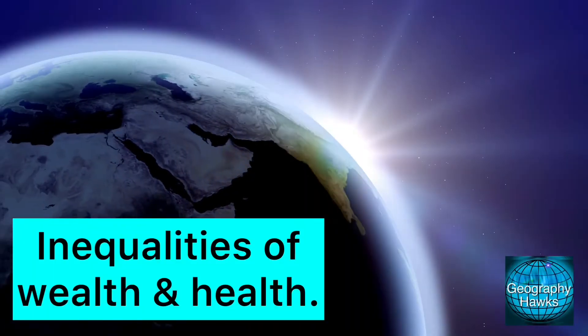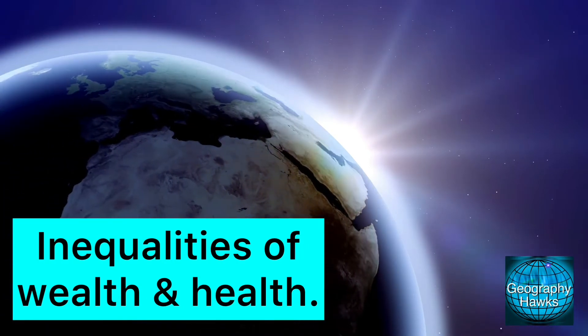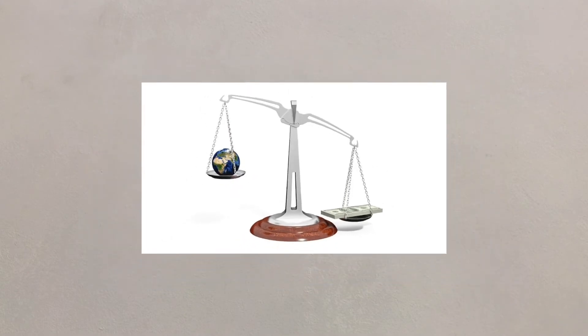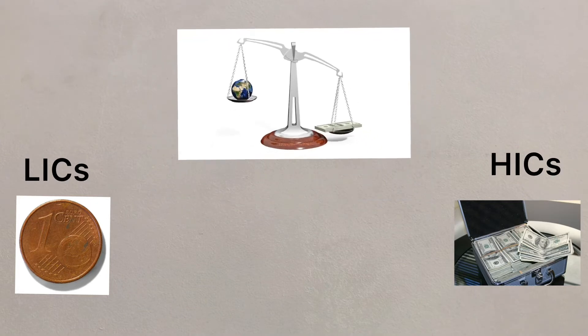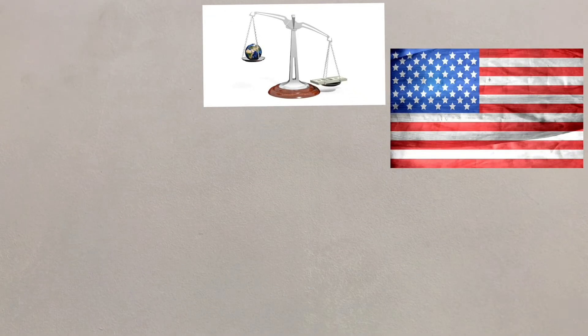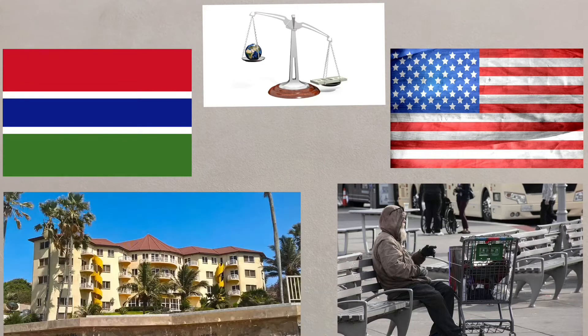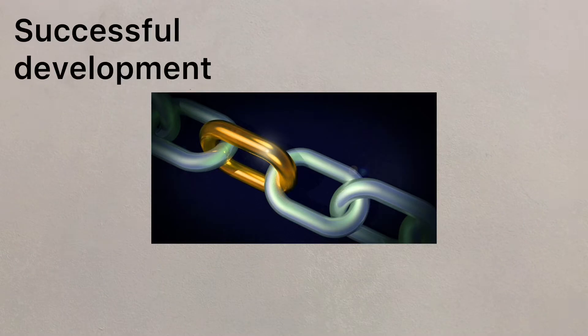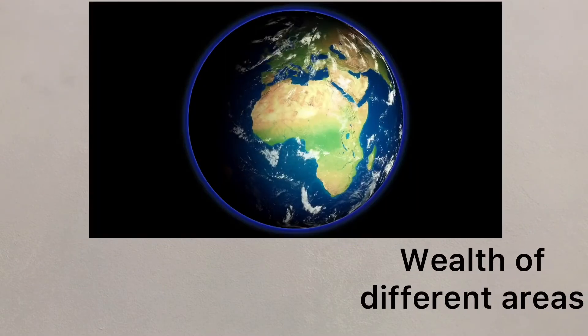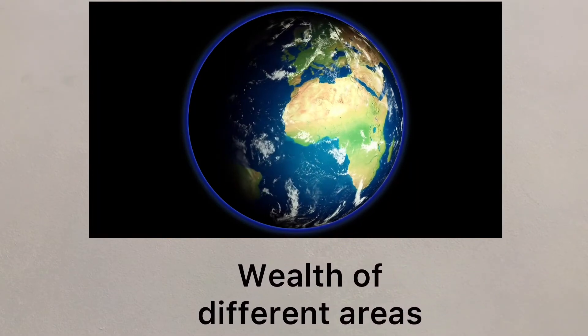Uneven development will lead to an unequal global society. There are differences in wealth distribution as well as the health care that people can receive. There is a clear global imbalance between the wealthier HICs and the less wealthy LICs, but there's also imbalance within countries as well, with HICs having many poor areas while some LICs have some areas of tremendous wealth. There is a link between the successful development of a country and the wealth of its population, and there are major differences between the wealth of different areas around the globe.